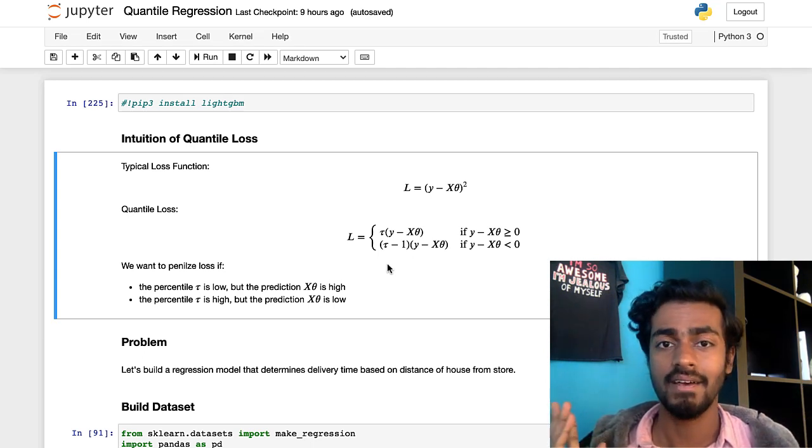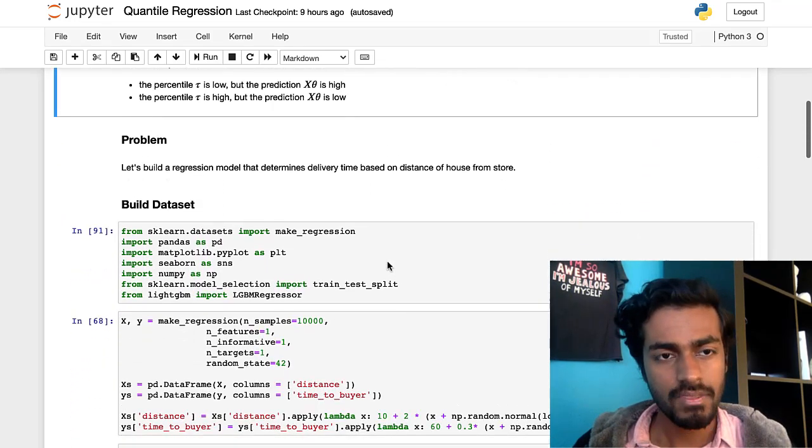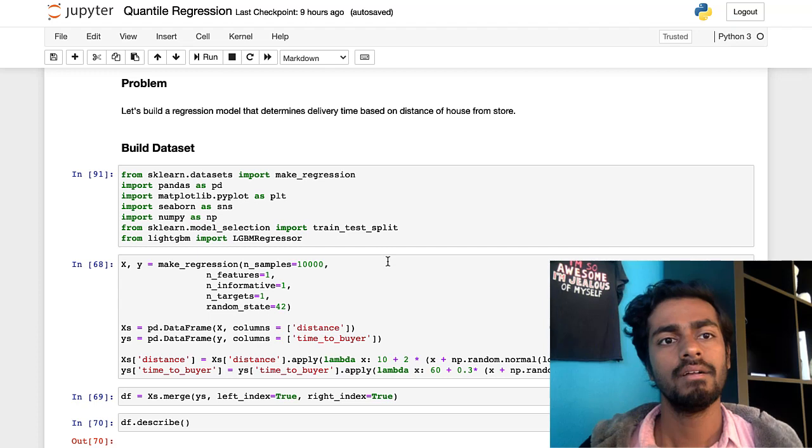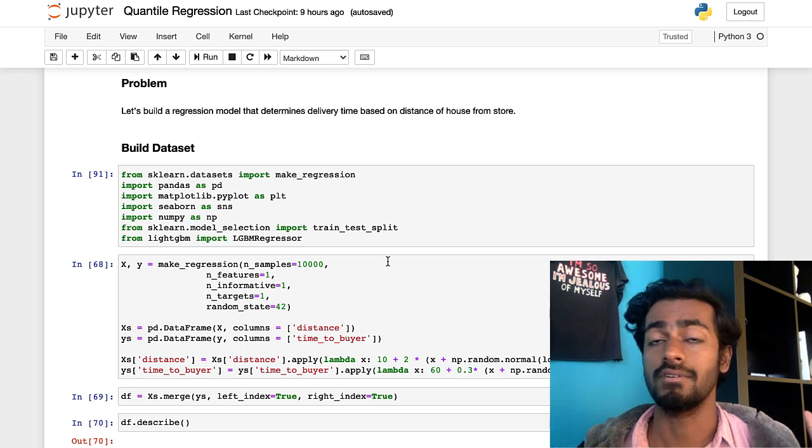And we can actually just jump into the actual problem here and implementation. So right now the big problem is like I said before, let's build a regression model that determines delivery time based on the distance from the buyer right.